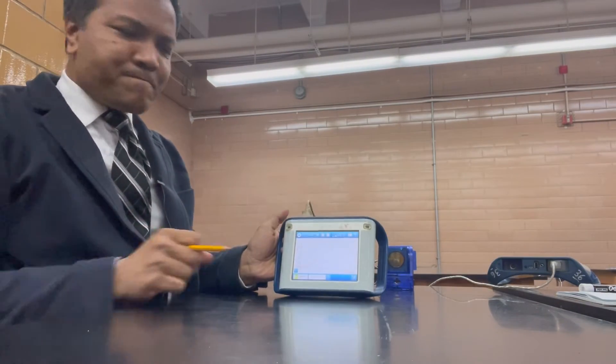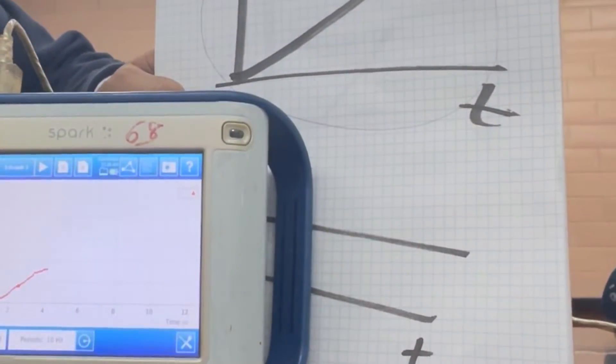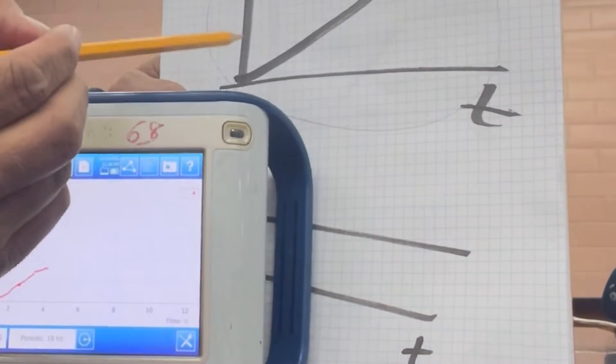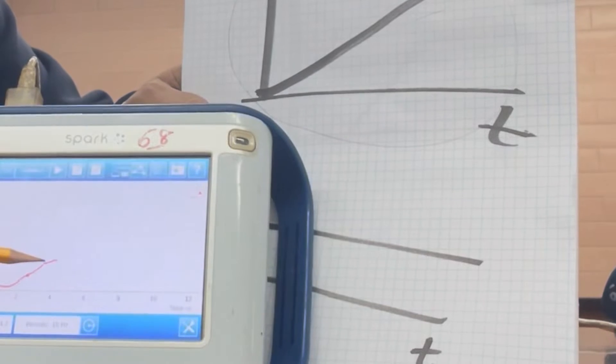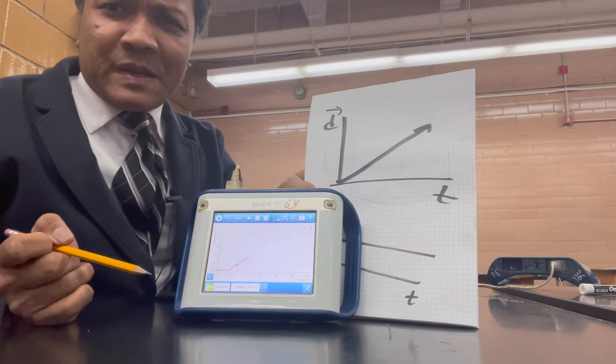Excellent, you see this graph and this graph is the same. This graph means object moves with constant velocity, and this graph from here to here, object moves with constant velocity.